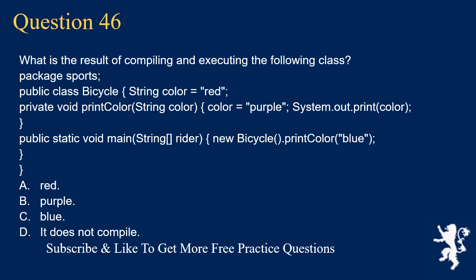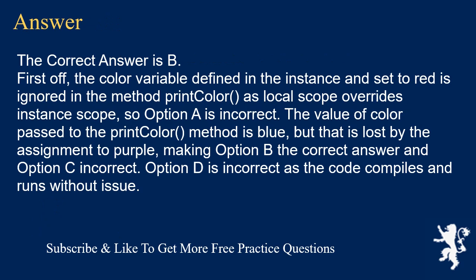Question 46: What is the result of compiling and executing the following class? Package sports, public class Bicycle, String color = "red", private void printColor(String color) { color = "purple"; System.out.print(color); } public static void main(String[] rider) { new Bicycle().printColor("blue"); }. Options: A) red, B) purple, C) blue, D) does not compile. The correct answer is B. The instance variable color set to red is ignored in printColor as local scope overrides instance scope. The value blue passed in is overwritten by the assignment to purple, making B the correct answer. The code compiles and runs without issue.